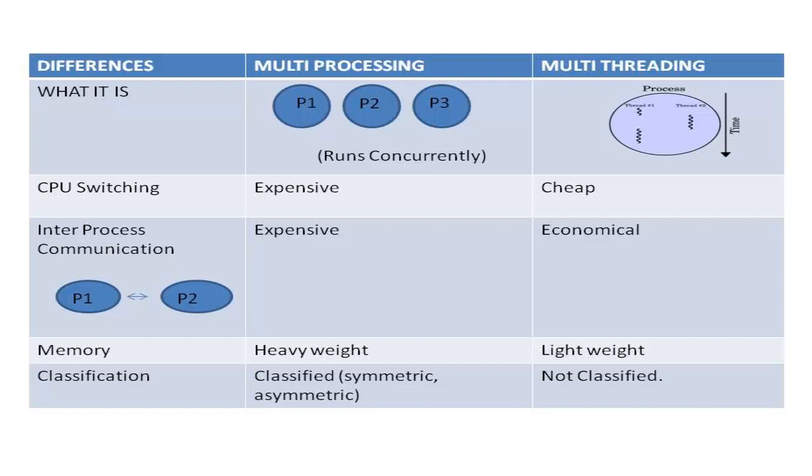In multi-processing, two or more programs run concurrently. Examples include hearing music, playing video games, and browsing. Each running program is called a process.